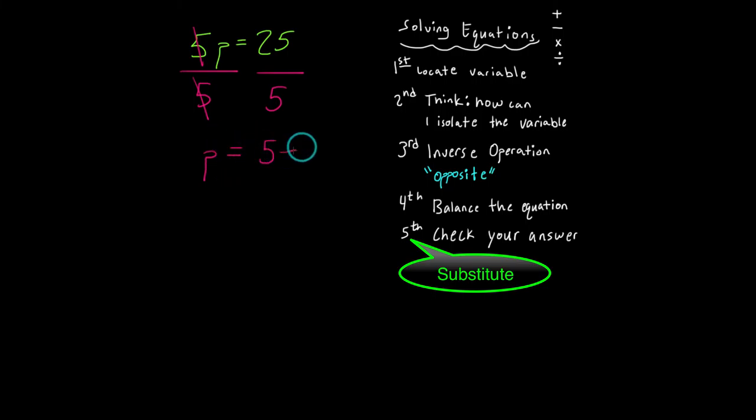I'm going to substitute five into the original equation for p. So now I have five times five is equal to 25. Well, five times five, that will give a value of 25. And that is equal to 25, which checks out.